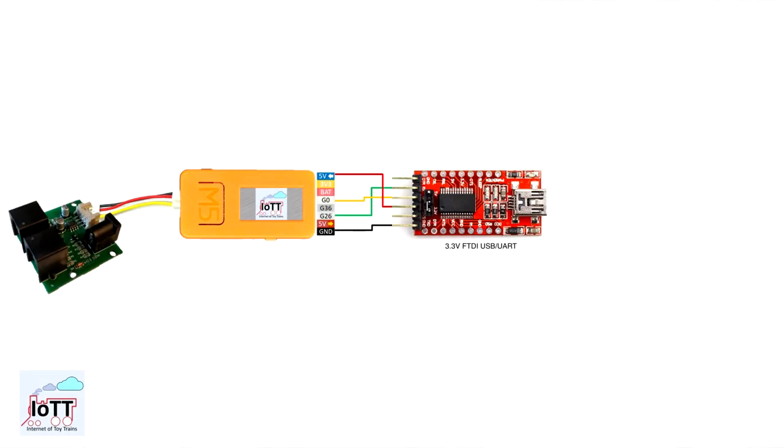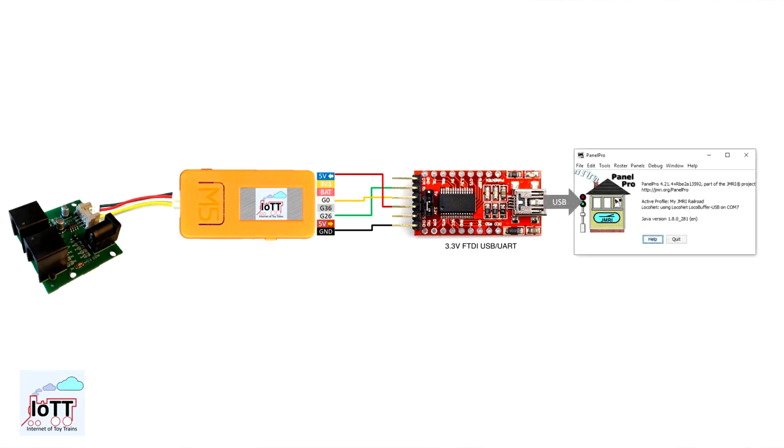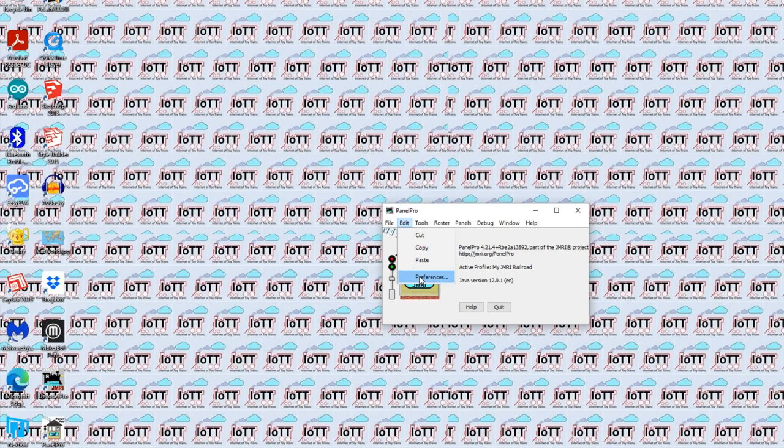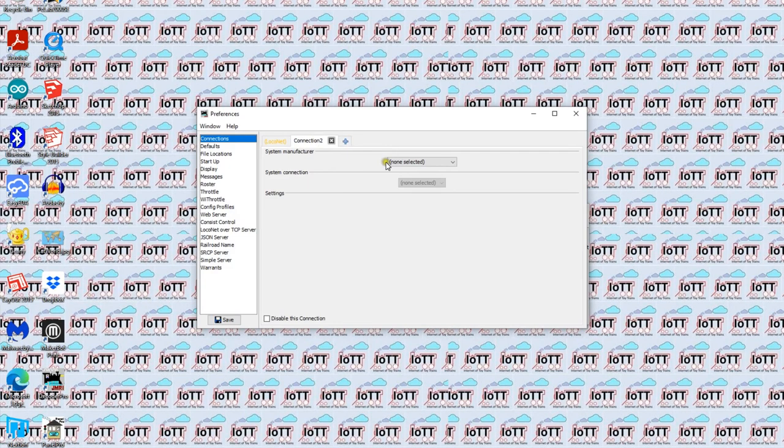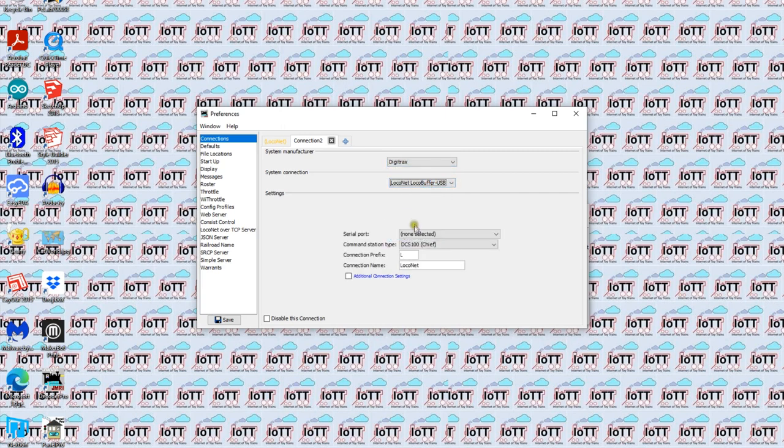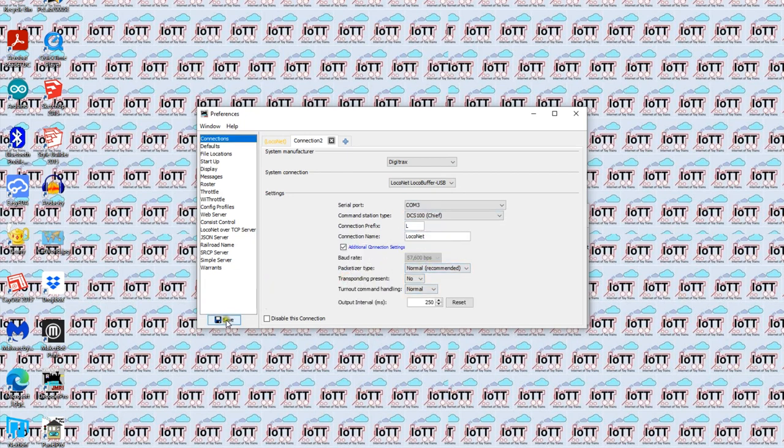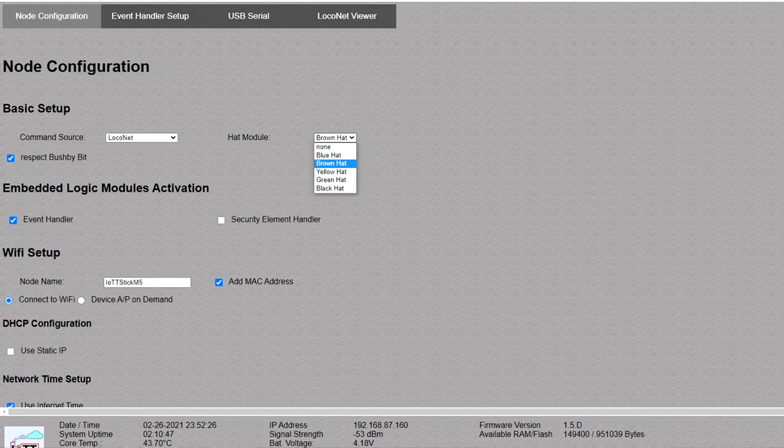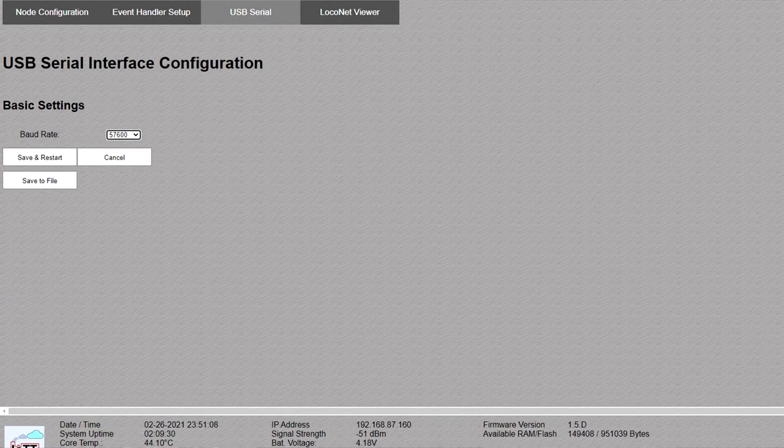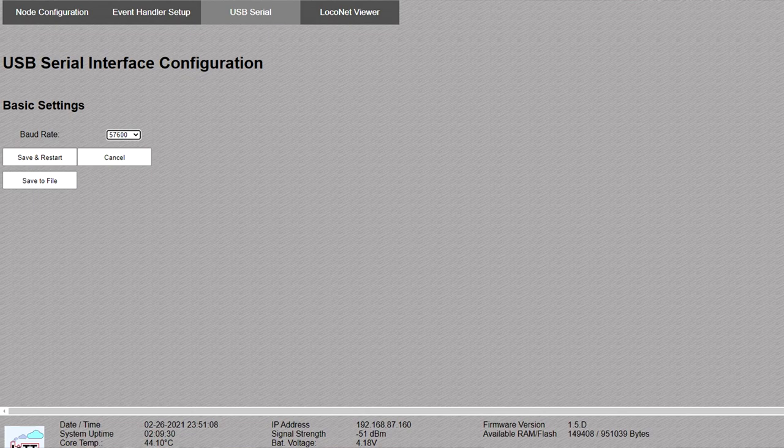The FTDI programmer is then connected to the PC using a USB cable. In JMRI, I set up a connection to Digitrax LocoNet via LocoBuffer USB. This is done in the preferences window under connections. I set the serial port and the command station and that's it. In the setup of the IoTT-stick, I select brown hat and after a restart, I get the USB serial tab, where I set the baud rate to 56700, which is the baud rate JMRI expects for the selected mode.